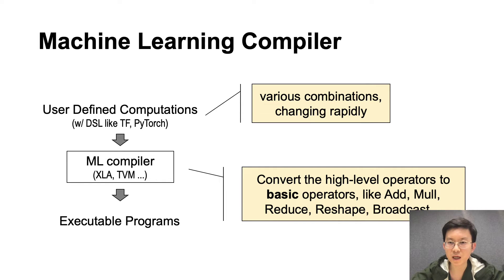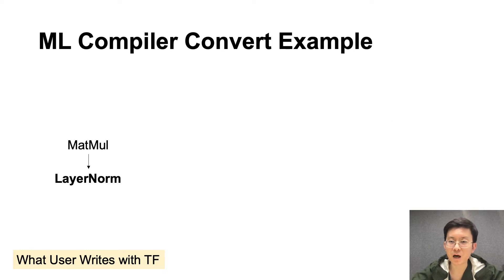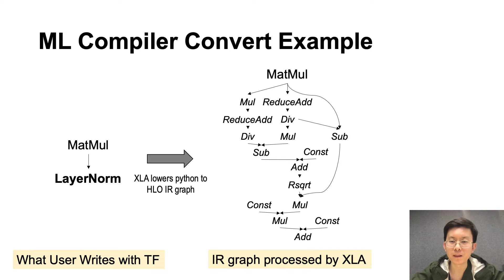To support the diversity and variability, machine learning compilers usually transfer high-level operators to a set of very basic arithmetic operators like ADD, SUB, MUL, REDUCE, BROADCAST, RESHAPE, and many others. Here is an example of how the TensorFlow XLA compiler deals with high-level operators. XLA is one of the state-of-the-art AI compilers and is widely used in industry. A layer norm op is lowered to more than 10 basic ops with the representation of HLO IR, and then XLA will optimize the program based on the graph of basic ops.